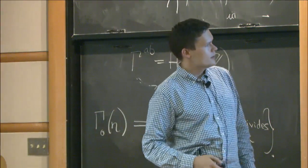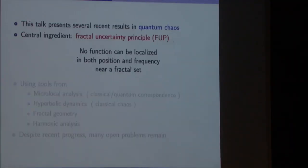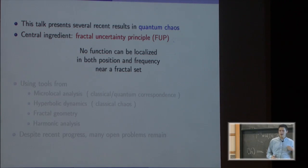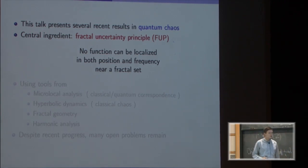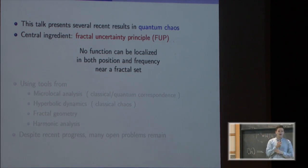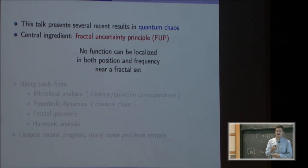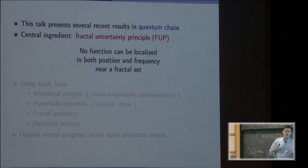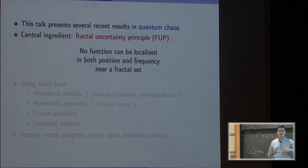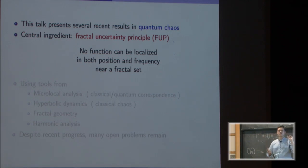I'll give some overview. I will present a couple of recent results in quantum chaos, a field masterfully introduced by Stefan this morning. The central new ingredient is a tool from harmonic analysis that I call the fractal uncertainty principle. It says, very vaguely, that no function can be localized in both position and frequency near a fractal set. By contrast, the usual uncertainty principle says that no function can be localized in both position and frequency near one point. So it's an extension of the usual uncertainty principle.